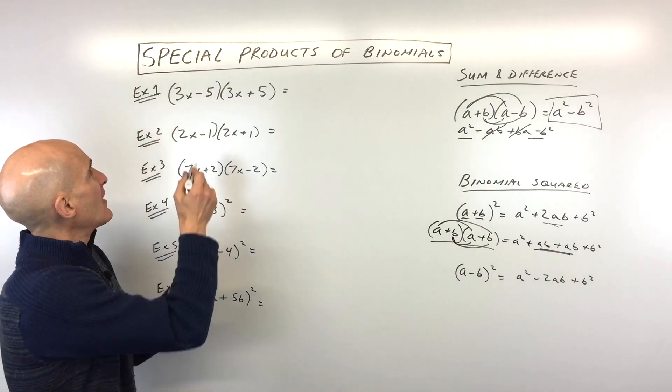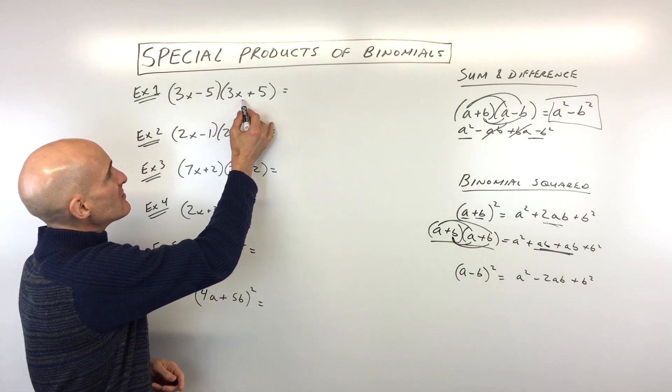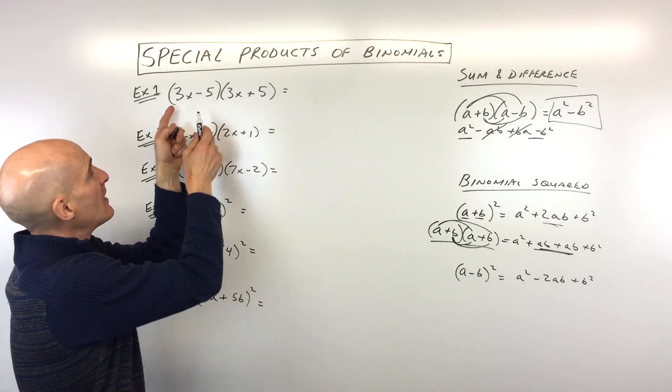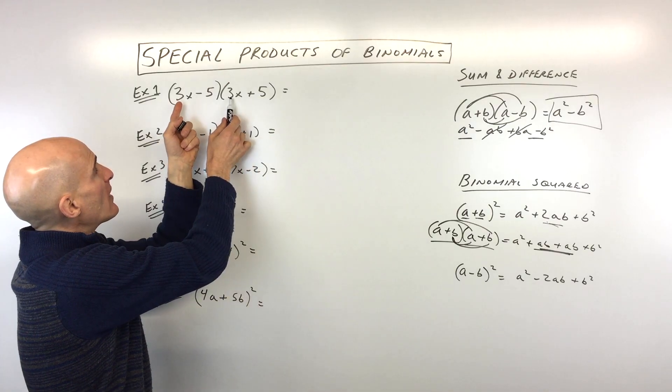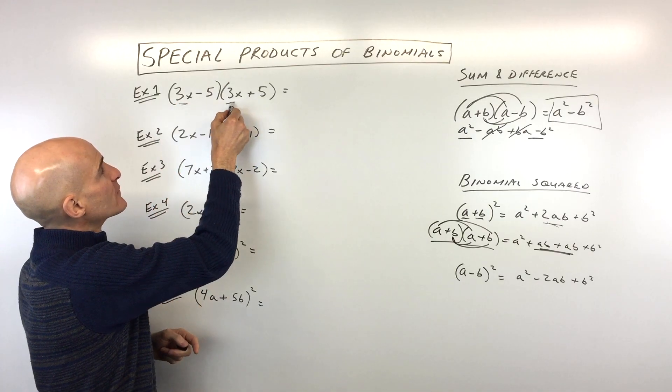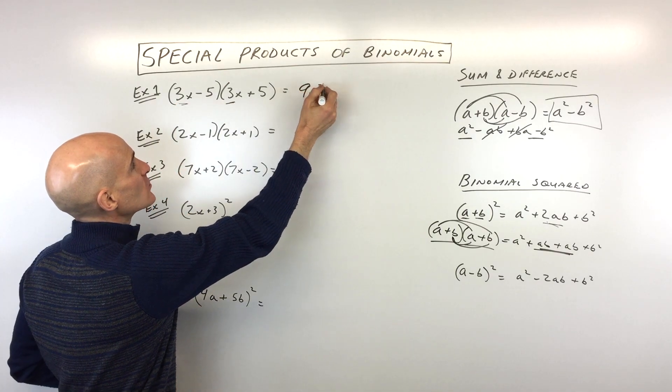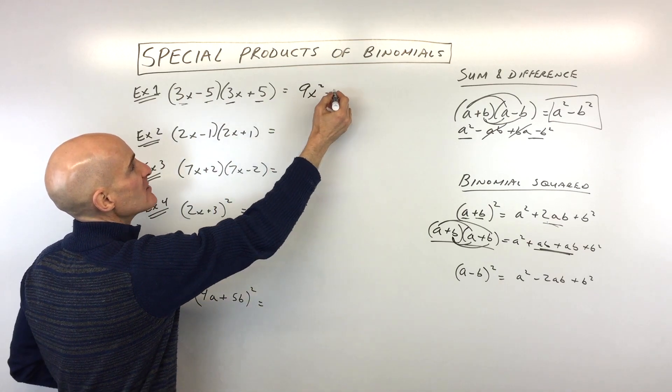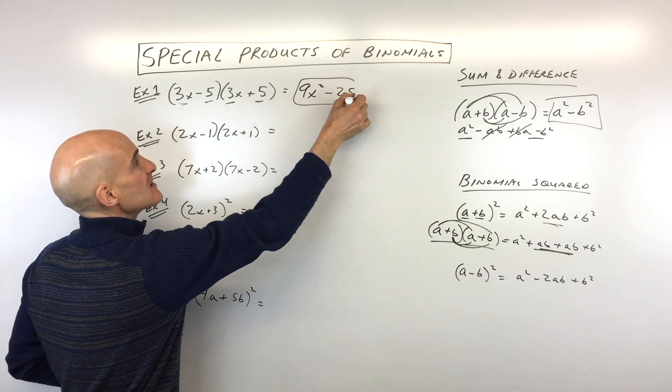So example number one, you've got 3x minus 5 times 3x plus 5. We notice that this is a sum and difference pattern. a and b are the same. So we know all we have to do is multiply the first term in this group times the first term in this group, which gives us 9x squared. And then the last term and the last term, negative 5 times 5 is negative 25, and that's it.